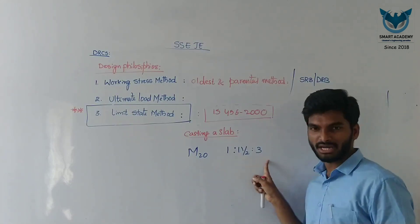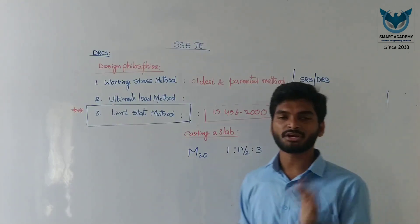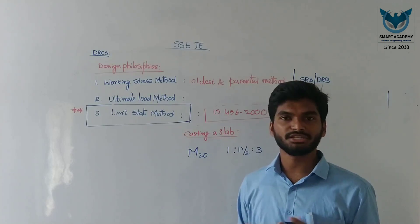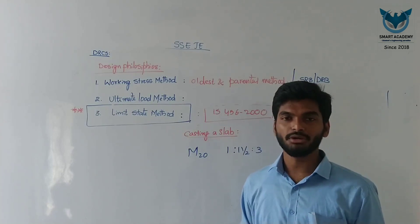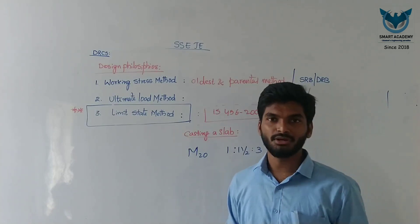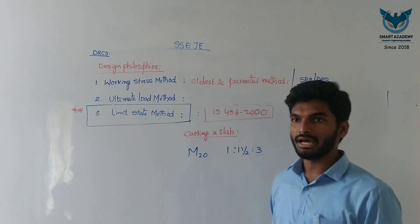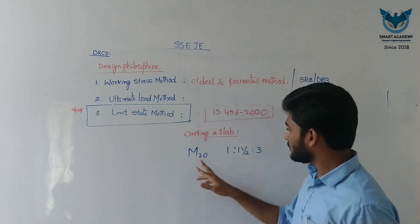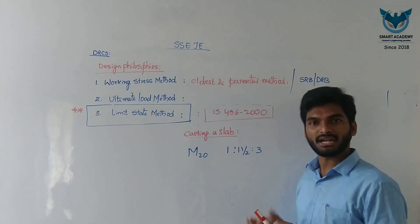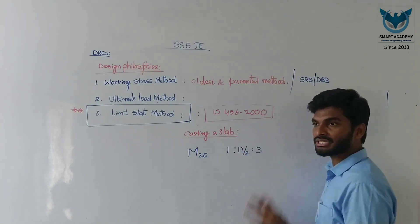For M20, the mix ratio is 1:1.5:3. The ratio for M15 is greater than that of M20 — M15 has a ratio of 1:2:4, whereas M20 uses 1:1.5:3.